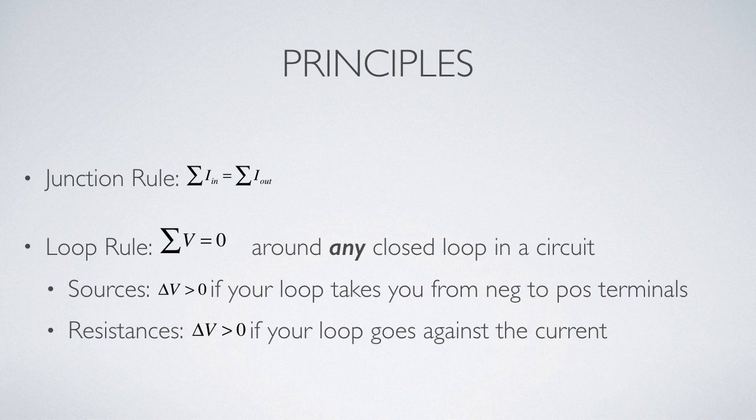Now, potential differences, depending on whether we start low and move high or start high and move low, can be positive or negative, so we need some sign conventions. In any kind of source like a battery or capacitor, we count its potential difference as positive if my loop takes me from the negative to the positive terminals. If our loop takes us from positive to negative, that is in effect downhill, and so we would consider that change in energy negative.